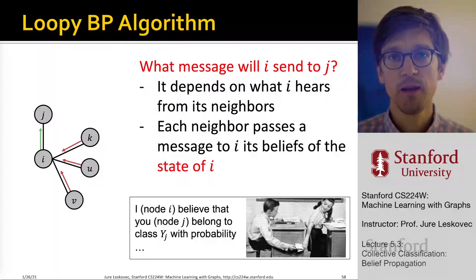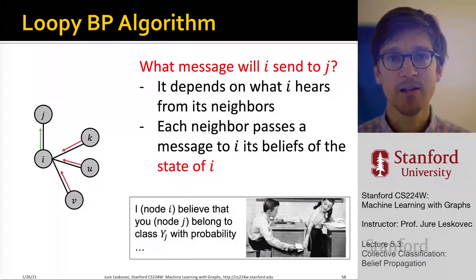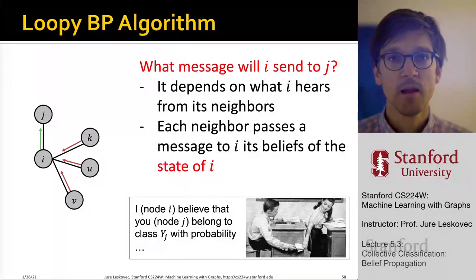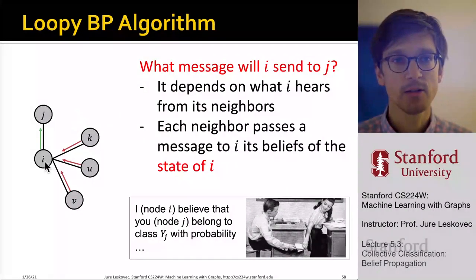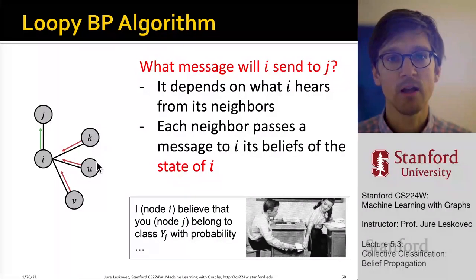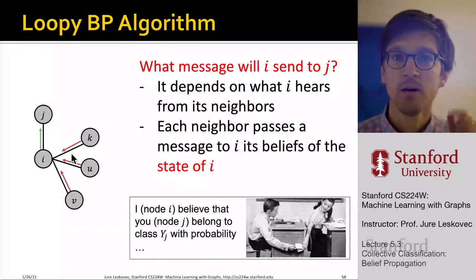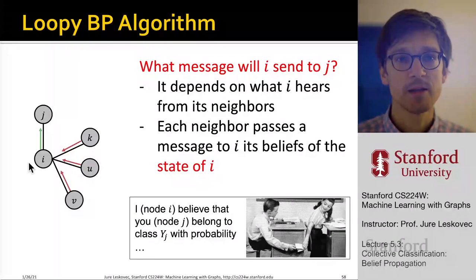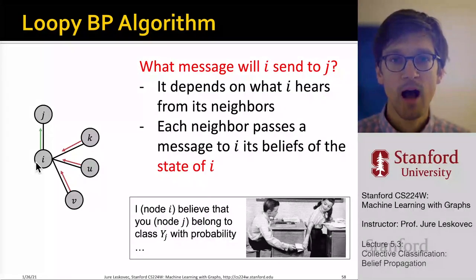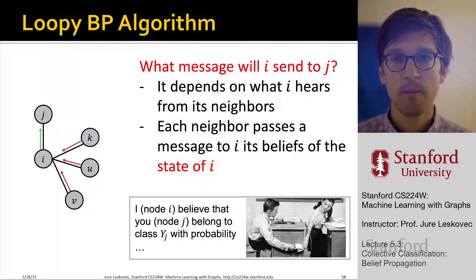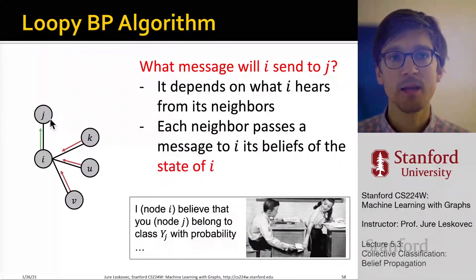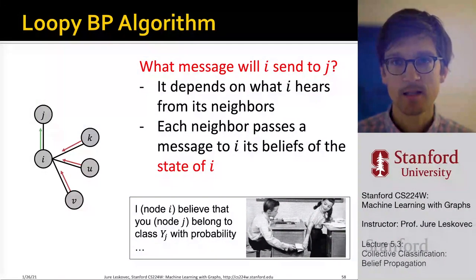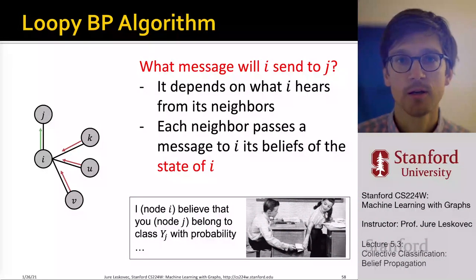In loopy belief propagation, the message sent from node i to node j depends on what node i hears from its neighbors. The content of the message from i to j depends on incoming messages from i's downstream neighbors. Each neighbor passes a message to i; i then collects those messages, computes and updates them, creates a new message, and sends it to node j. That's essentially what loopy belief propagation does.